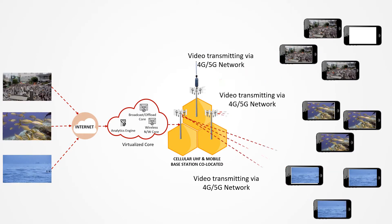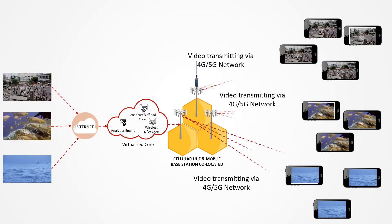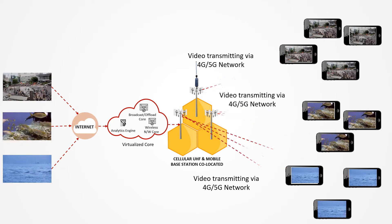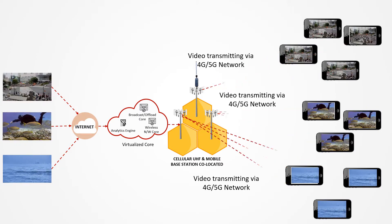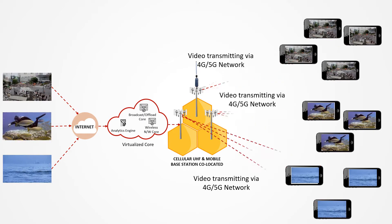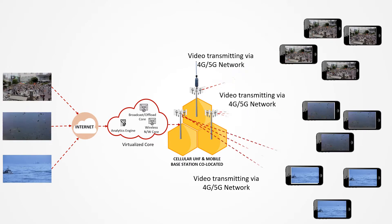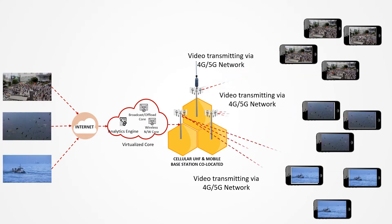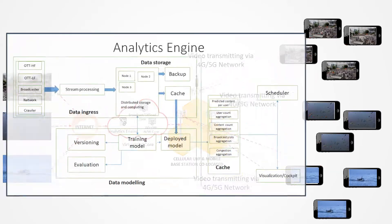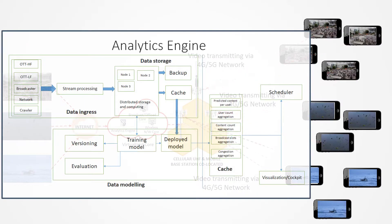Content 1 becomes viral and more users want to watch the same content. When an additional user requests content 1, it is initially transmitted over the mobile network in a unicast profile. The analytics engine in the virtualized core continuously monitors the network, social signals, and content consumption patterns to make decisions.